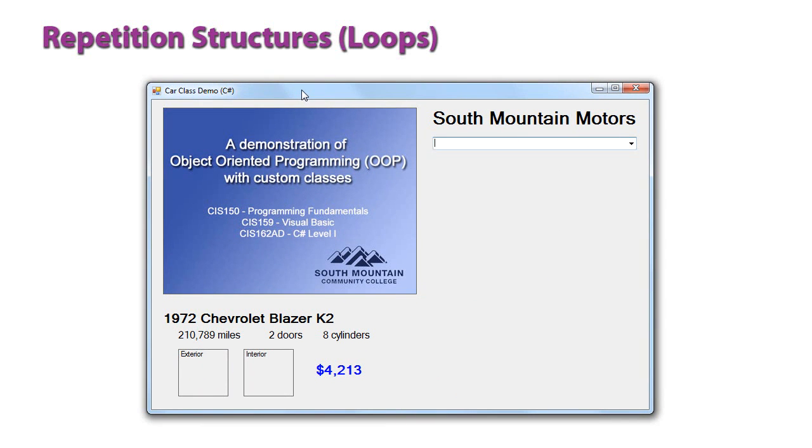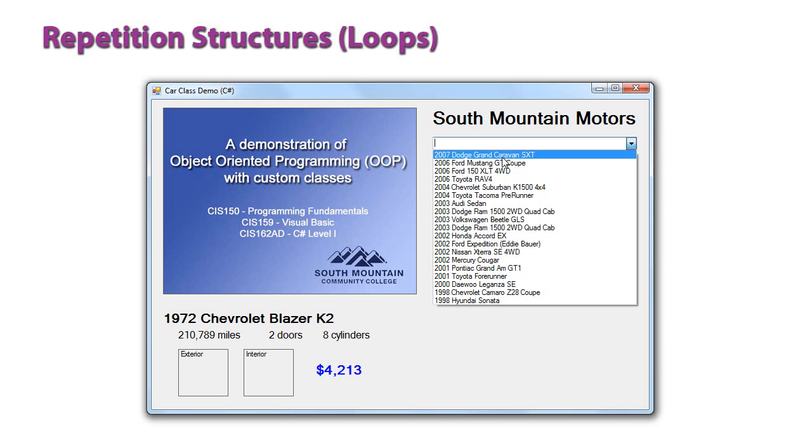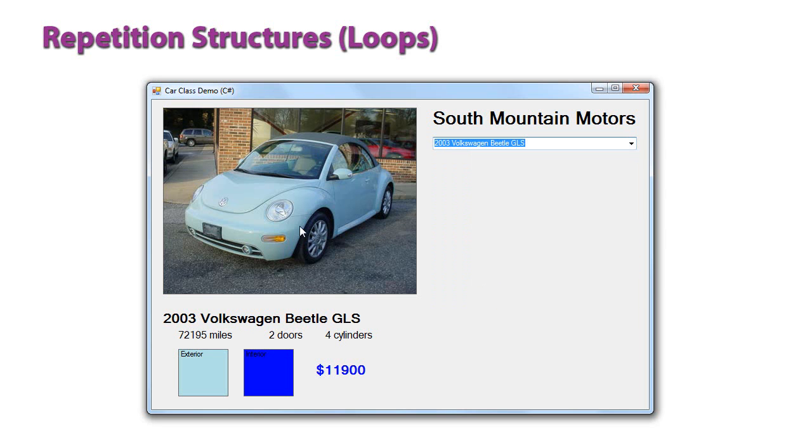And then as we work with arrays and with data later on in the semester, we will use loops to process that information. So here I've got an application that's reading in a database of vehicle information along with pictures of those vehicles. And I've got a populated drop-down list here from that database. So this was all read in using a loop from external files. And I can then click on one of those items and see the picture and some information about that car.